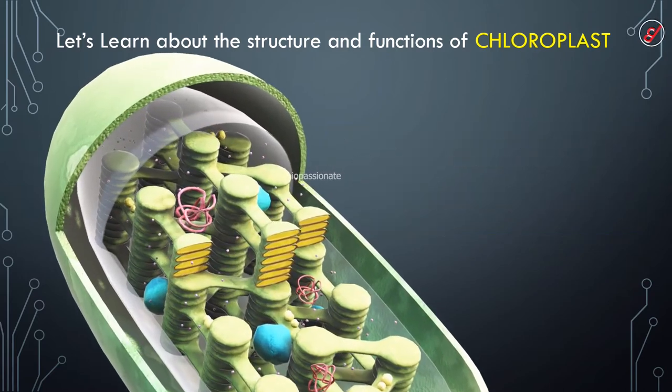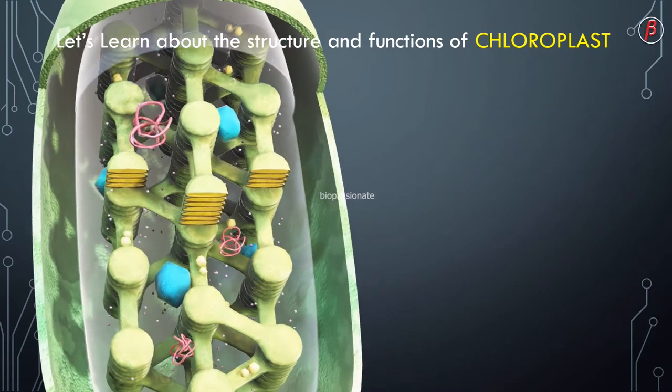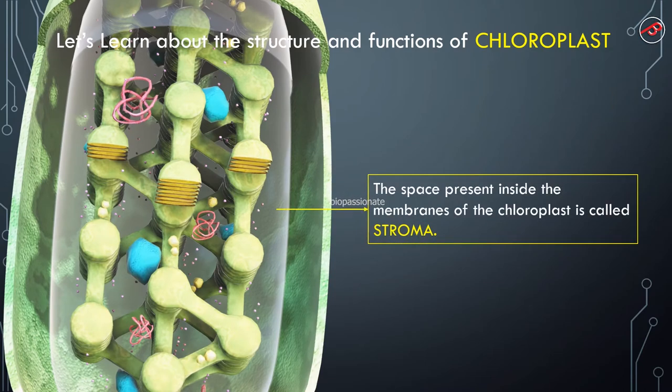Like other organelles of a plant cell, chloroplasts are double membrane-bound organelles having outer and inner membranes. The inner membrane is less permeable when compared to the outer. The space present inside the membranes of the chloroplasts is called stroma.